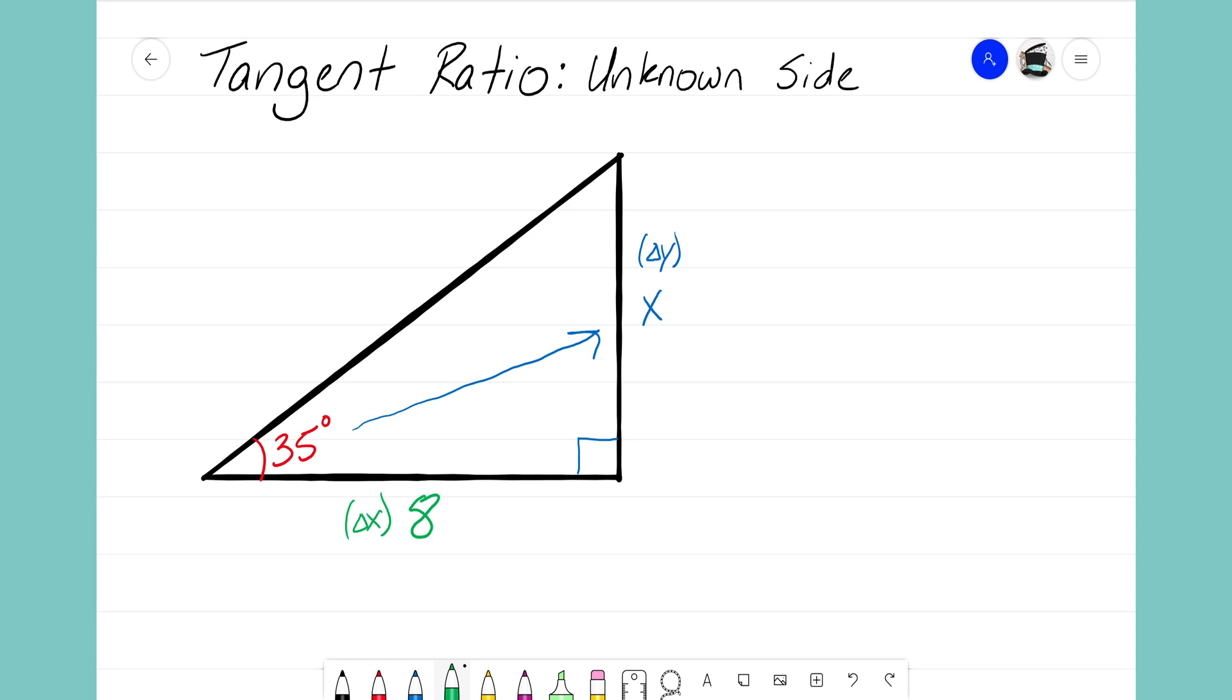And what this problem wants us to do is we want to see can we use this idea of the tangent ratio to help us solve for our unknown side x. So let's go ahead and use this triangle and set up our tangent ratio.